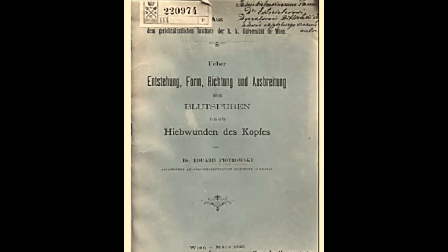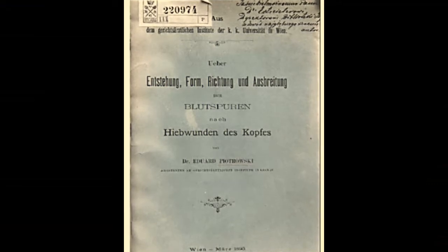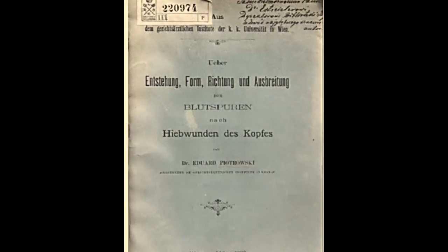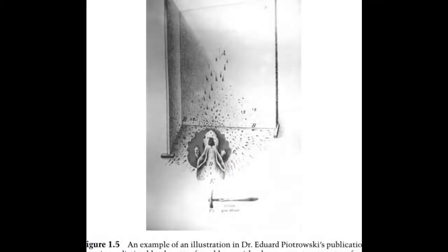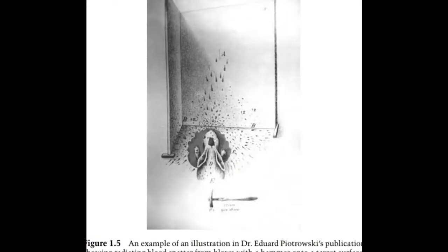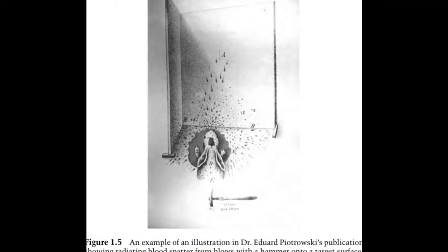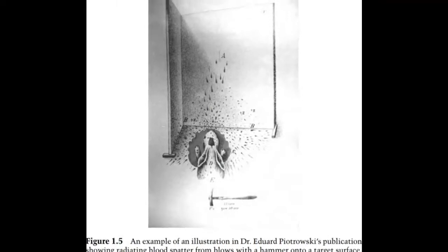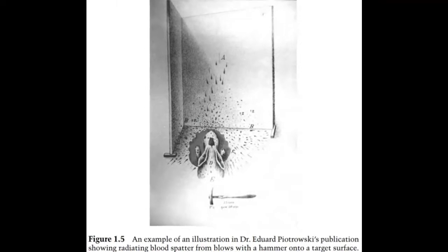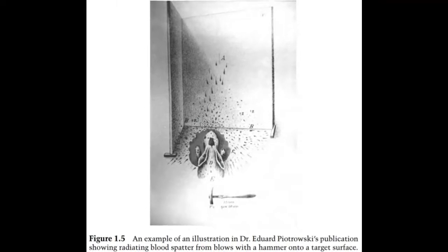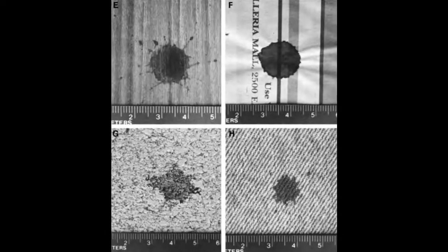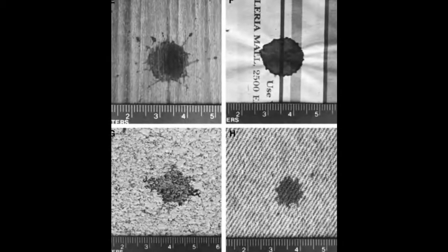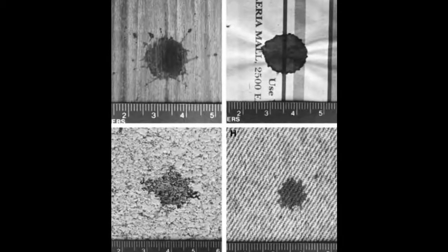The first scientific study on blood spatter was conducted in Poland in 1895 by a doctor named Edward Piotrowski. His controversial practices involved battering small animals like rabbits using rocks and other instruments while varying the angle and position of attack to see how the shape and pattern of the bloodstains differed. Although this would never be allowed today, his studies increased the prevalence of bloodstain analysis.